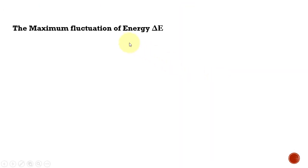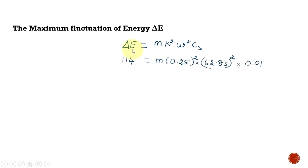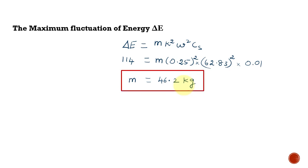Now we calculate the mass of the flywheel using: ΔE = M k² ω² Cs. We know ΔE = 114, k = 0.25 m, ω = 62.83 rad/s, and Cs = 0.01. Solving for the only unknown, the mass of the flywheel is 46.2 kg. Thank you.